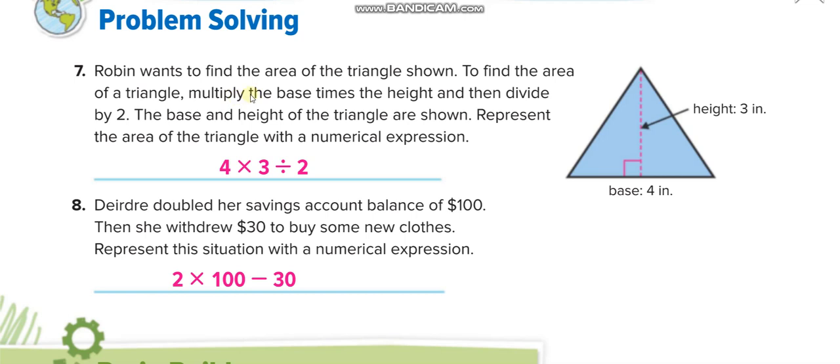To find the area of the rectangle, they said multiply the base and the height. Base is 4, height is 3. Multiply the base and the height, then divide by 2. Divide by 2.